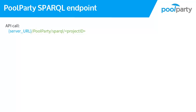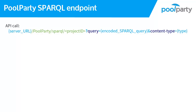The SPARQL endpoint can be called programmatically as a POST or GET request with the required parameter query. Through the content type parameter, which is optional, one can set what the response type should be. XML is the default, but you can also have options like JSON, Trig, or Turtle.